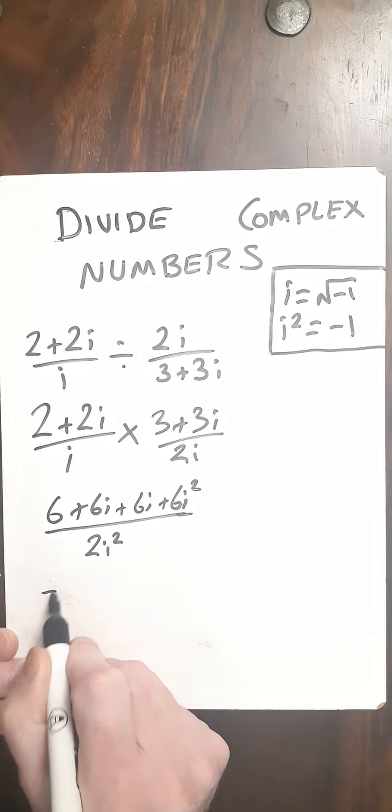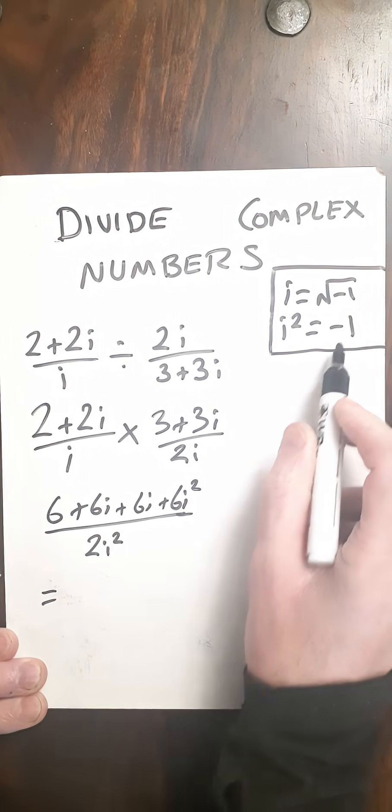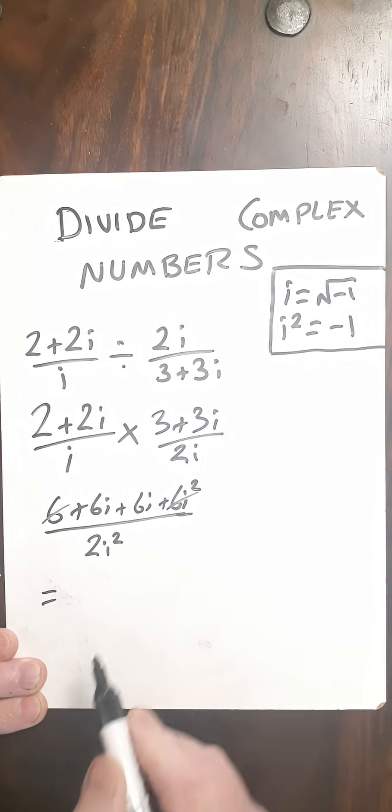OK, so now let's simplify this. 6 plus 6i squared, well i squared is minus 1, so that's minus 6, so they cancel out.